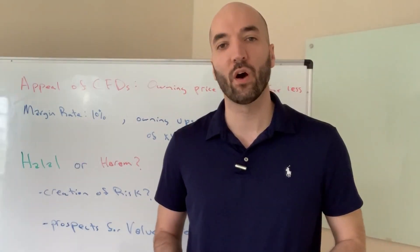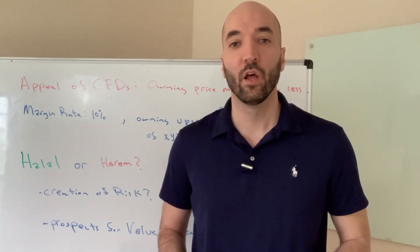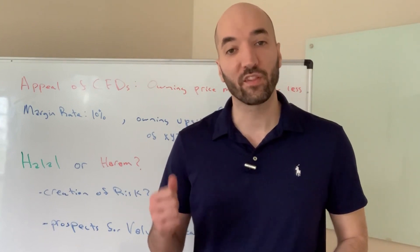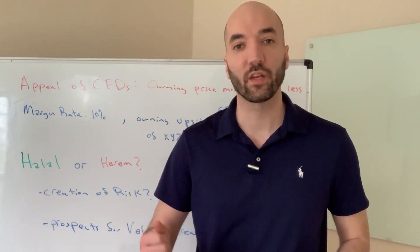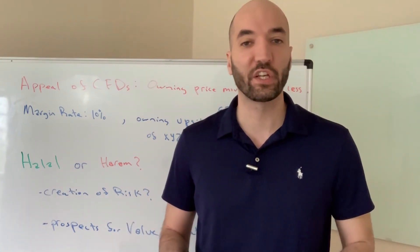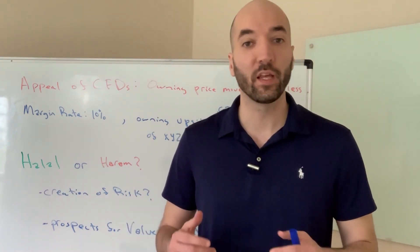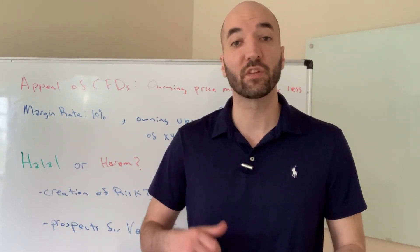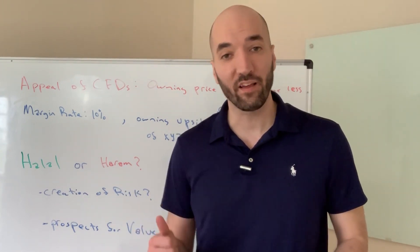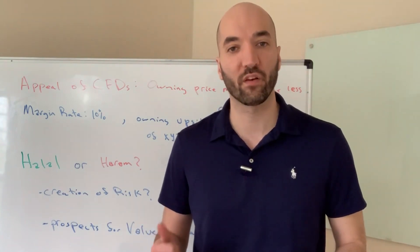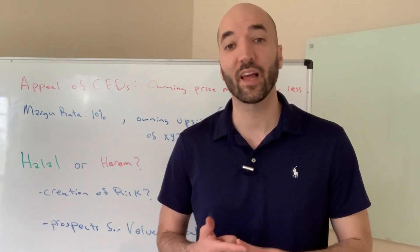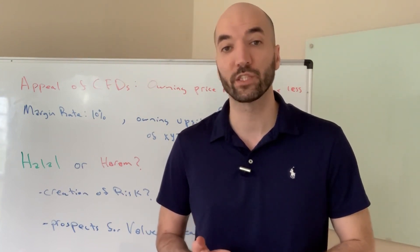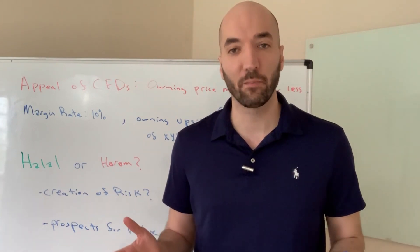In a previous video, I explained that in order to identify al-Maysir, you need to ask two questions. The first is: does this activity involve the creation of risk in hopes of gain? The second question is: does this activity hold any prospects for creating value? If the answer to the first is yes — you are creating risk in hopes of gain — and the answer to the second is no — there are no prospects for value creation — then this is al-Maysir.